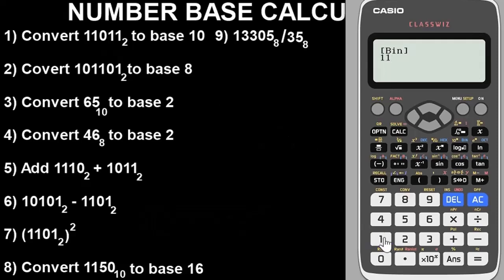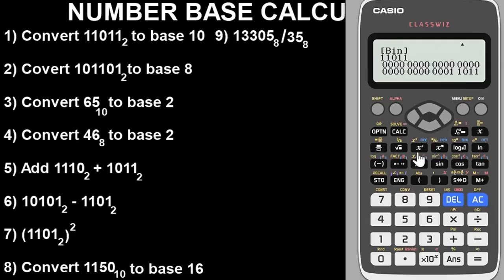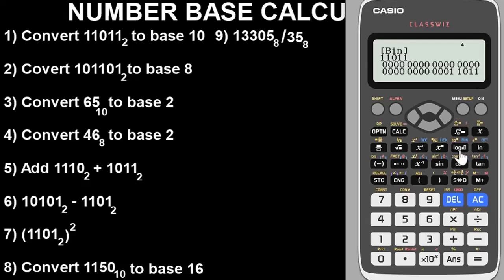Now input the value: 1 1 0 1 1. The calculator is now in base two. Press equals. This is the value in base two. To convert it to base 10, press the Decimal button — look at the X button, you'll see 'DEC' above it — press it and the number changes to base 10. The answer is 27 in base 10. It's as simple as that. If you want to see it in binary again, press the Binary button, and to go back to decimal press that button again. That's question one.